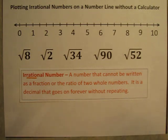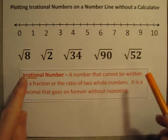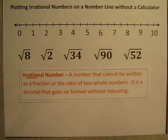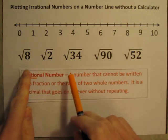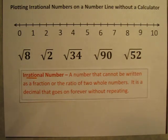The most famous irrational number, of course, is pi, but we'll be looking at some other ones. It turns out if you take the square root of most numbers, it will give you an irrational number, like these five square roots here.